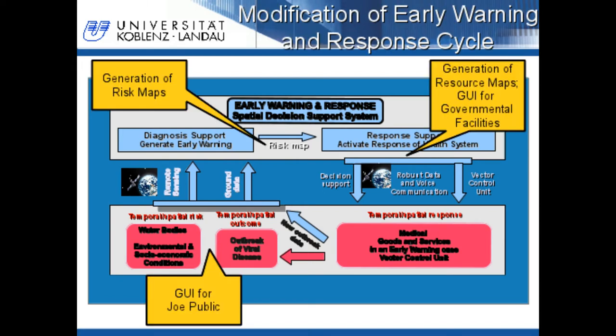On this sheet you can see the places in the cycle where my research is incorporated. Between diagnosis support and response support, risk maps are generated. This is done for the visualization of risk. For the response support, resource maps are generated and a graphical user interface for governmental facilities is developed. Finally, a graphical user interface for Joe Public, who might be located in a hazardous area, is developed as well.